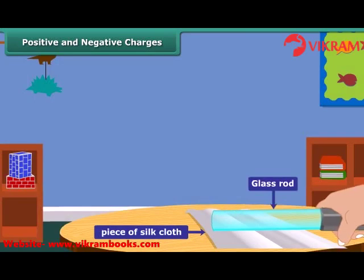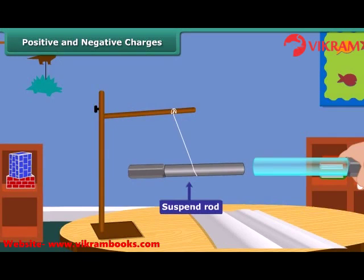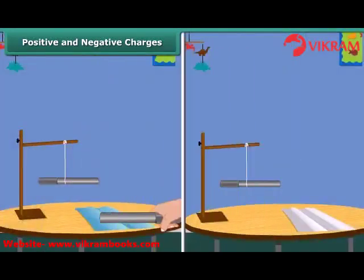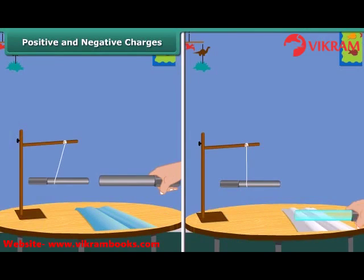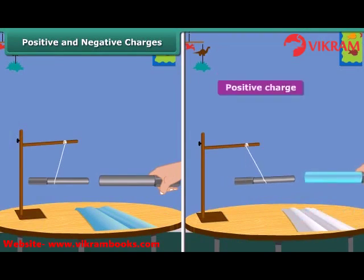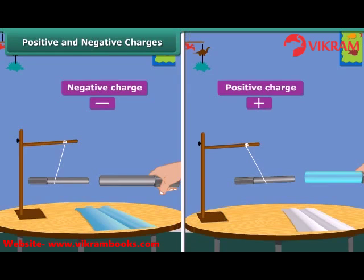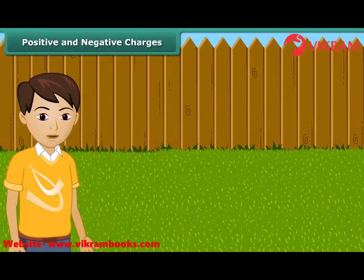Now take a glass rod and rub it with a silk cloth. Bring this glass rod close to the charged suspended ebonite rod. What do you observe? The suspended ebonite rod comes closer to the glass rod. The charges produced in the ebonite and the glass are different in nature. These two kinds of charges are called positive and negative charges. By convention, the charge on a glass rod rubbed with silk is taken as positive, and that of an ebonite rod rubbed with woolen cloth is taken as negative. From this activity we can conclude that like charges repel each other, and unlike charges attract each other.